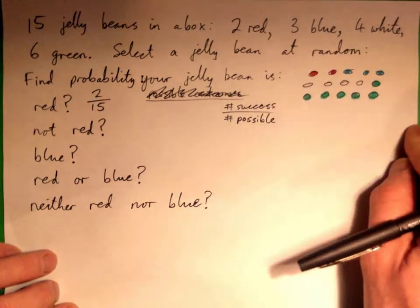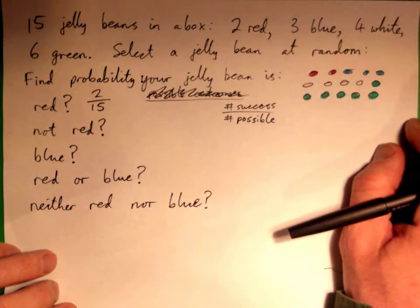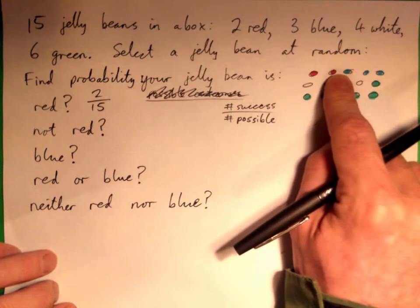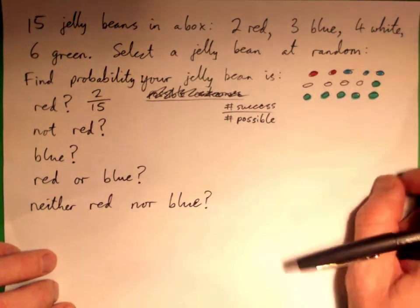There's 15 jelly beans, right? And only two of them are red. So I have two chances out of 15. Does that make sense?